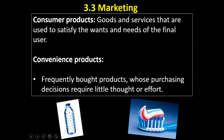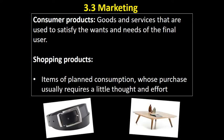First, convenience products — frequently bought purchases whose purchasing decision requires little thought or effort. You don't spend a lot of time agonising over what toothpaste to buy or what brand of bottled water to get. In terms of the marketing mix, price would be the most important factor, the location of the product in the shop might be important, and brand awareness would also play a role.